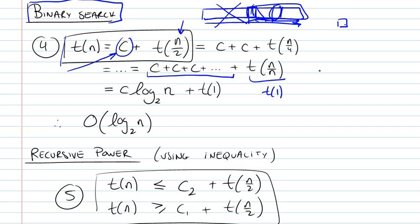It will be a constant because you've basically, you only have one element and you're looking for one element. So it would be either it's there or not. It's one constant. And then we have a bunch of c's. How many c's do we have?